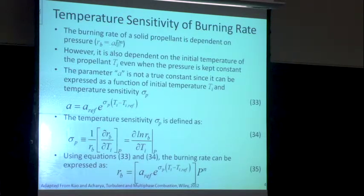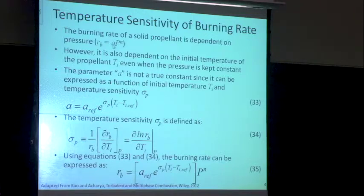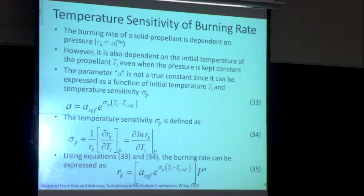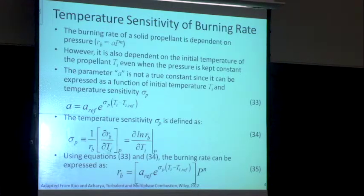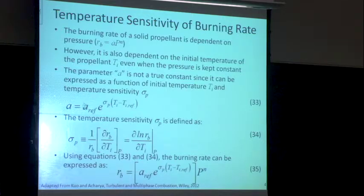Going back to St. Robert's Law, the A factor is not really a constant — it's a function of the initial temperature of the propellant. People have introduced what's referred to as the temperature sensitivity of the burning rate through sigma_P, defined as how the burning rate responds to initial temperature at constant pressure, divided by the burning rate. So the burning rate coefficient has a temperature dependence: a reference A factor times the exponential of the temperature sensitivity times the bracket of initial temperature minus the reference temperature.